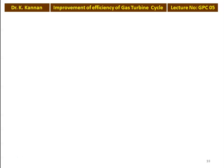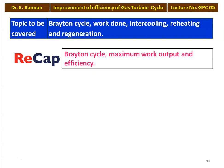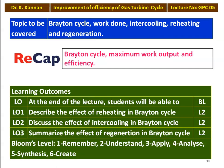We are going to study about the improvement of efficiency of the gas turbine cycle — specifically the 3 methods of increasing the efficiency of the gas turbine cycle. In the previous lecture, we studied about the Brayton cycle, the maximum work output, and derived the expression for maximum work output and the efficiency of the Brayton cycle. In this lecture, we are going to study about the work done and efficiency of the Brayton cycle with intercooling, reheating, and regeneration.